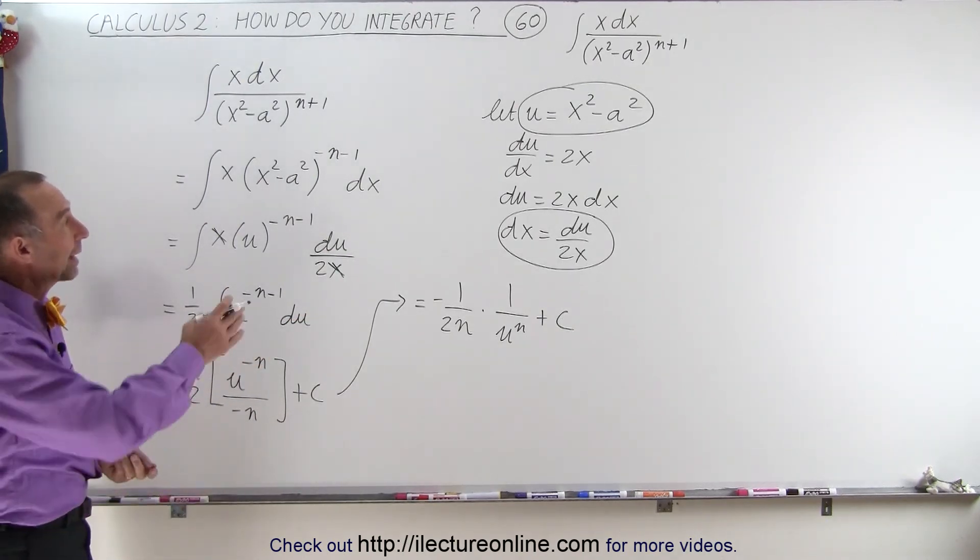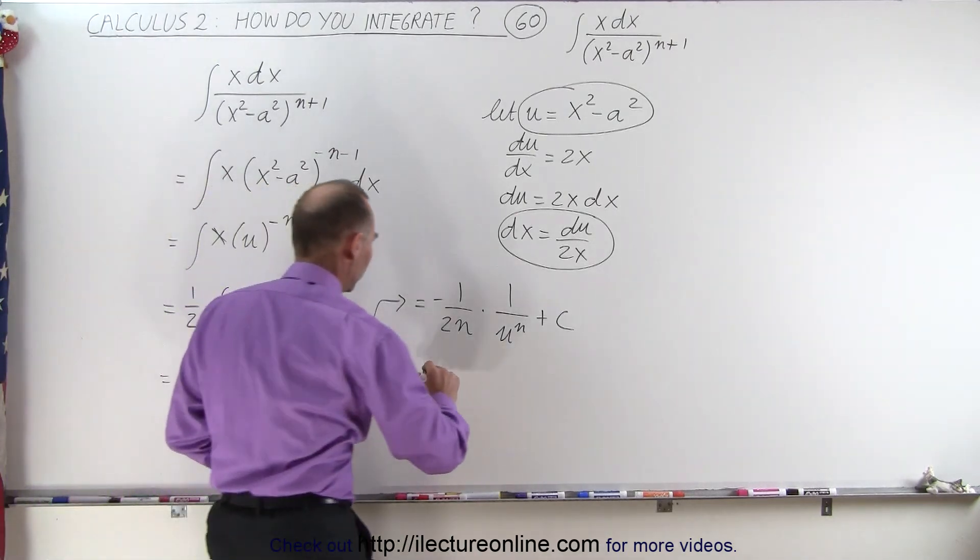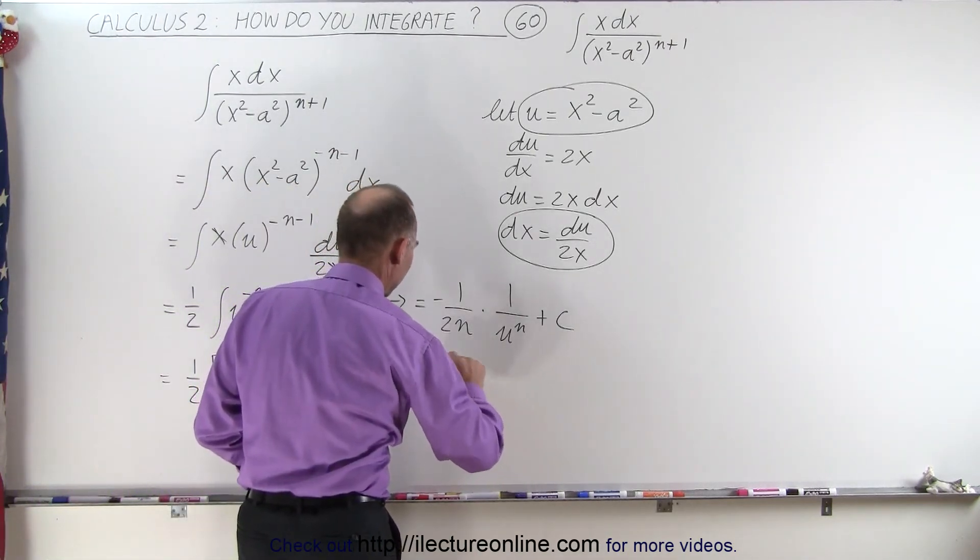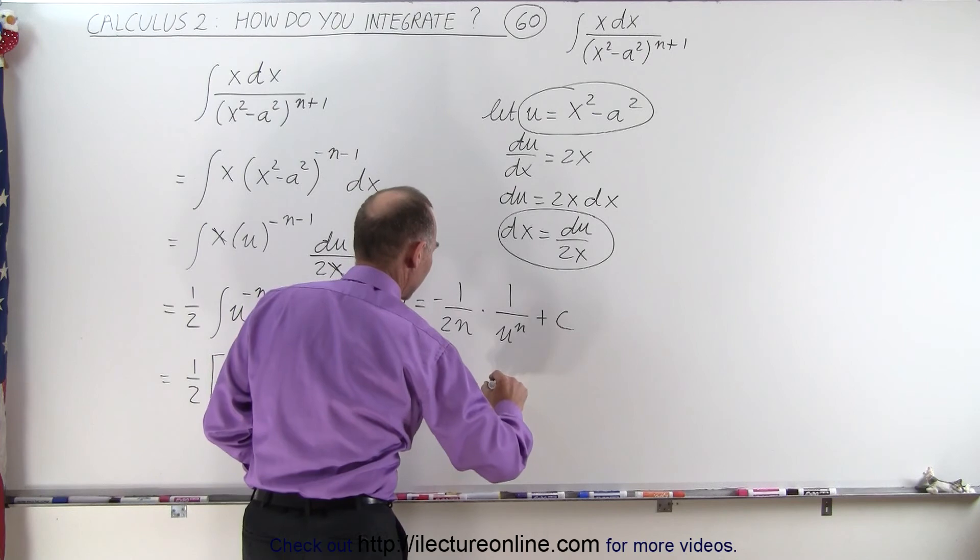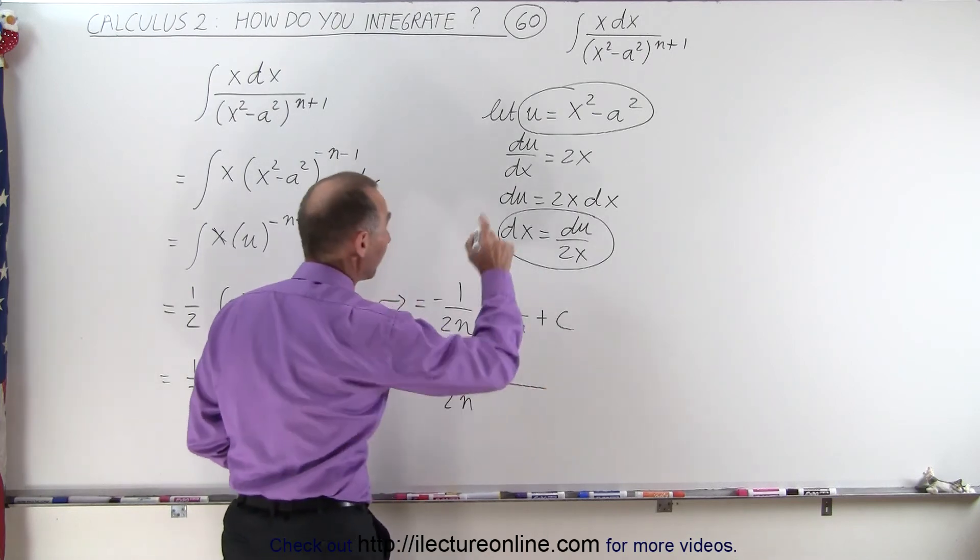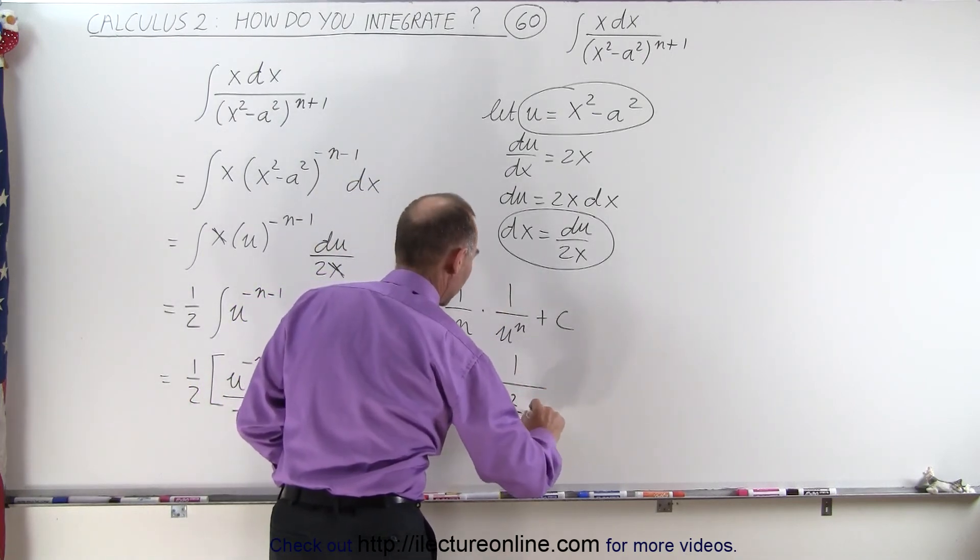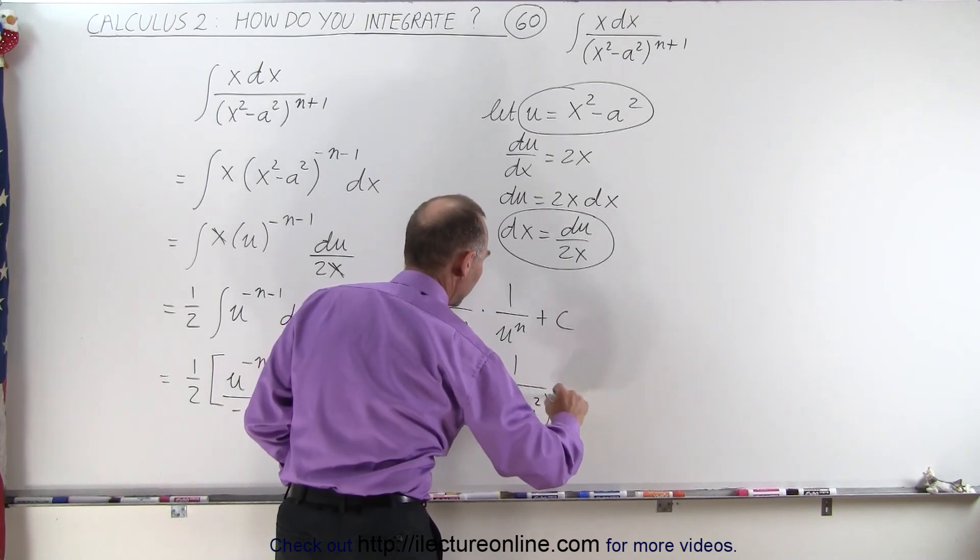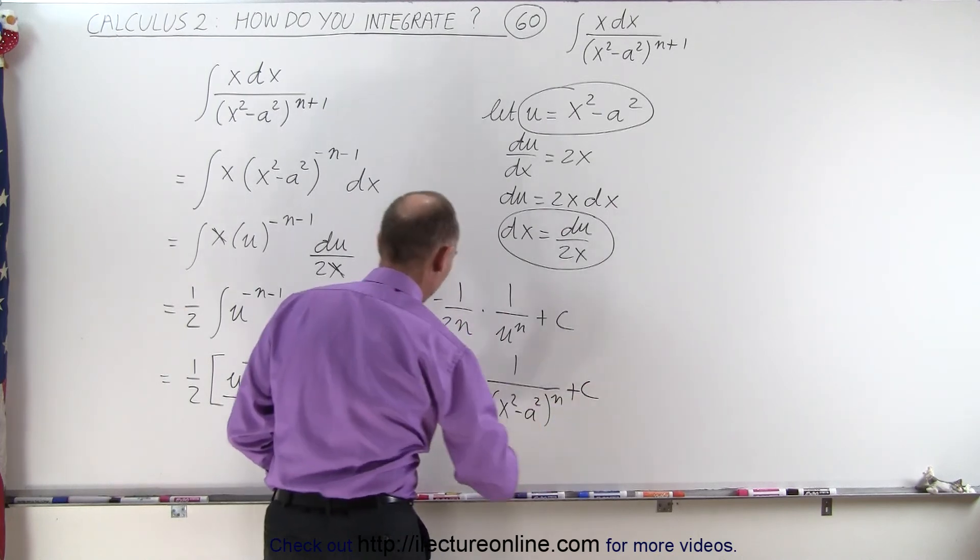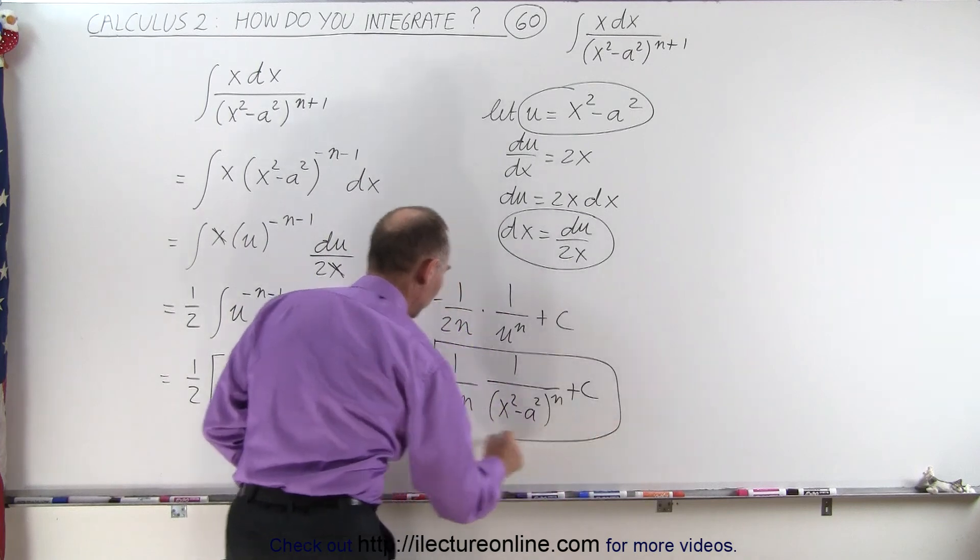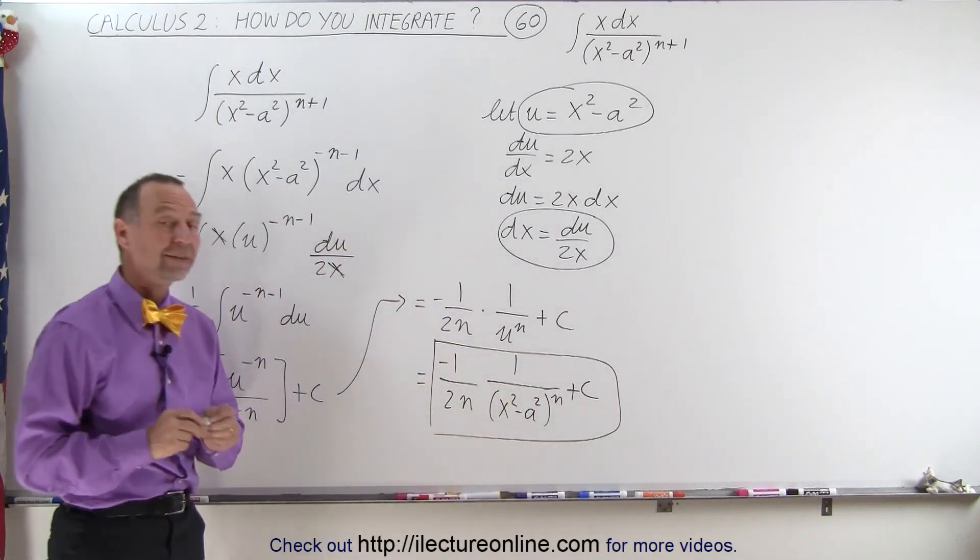And then all we have to do is plug back in what u is equal to, so this becomes equal to negative 1 over 2n times 1 over the quantity x squared minus a squared to the n power, plus a constant of integration, and this would then be the result of that integral.